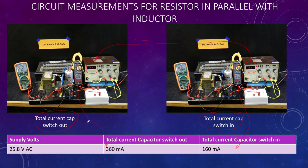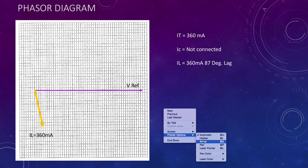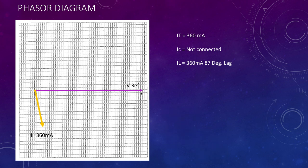So how can we represent this on a phasor diagram? Here on this phasor diagram, you can see I've put in the voltage reference. I've got my current here in my inductor at 360 milliamps, at about that 80 odd degrees that we had in here.